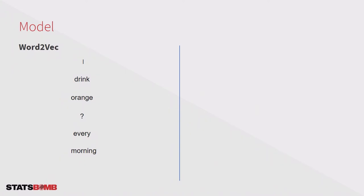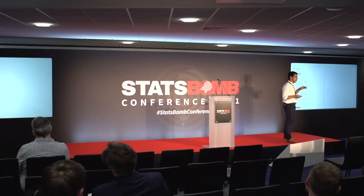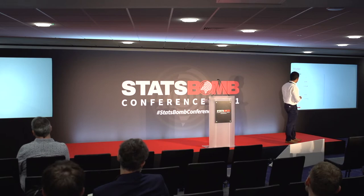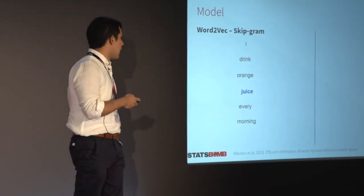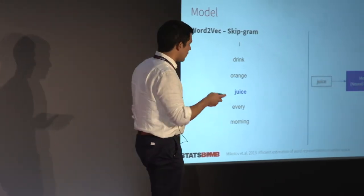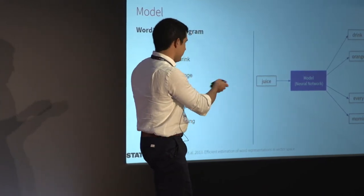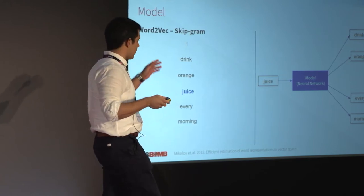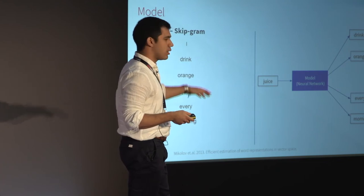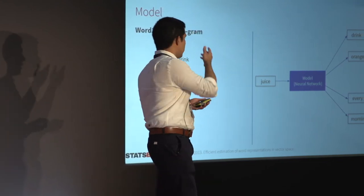To create these embeddings, I'm going to borrow an idea from natural language processing called Word2Vec. In Word2Vec, they take advantage of the fact that language is predictable. For example: 'I drink orange blank every morning' — most people would agree the missing word is 'juice.' In Word2Vec, they try to predict the context of a word. In this example, they want to predict that 'drink,' 'orange,' 'every,' and 'morning' are words that normally appear in the context of 'juice.'